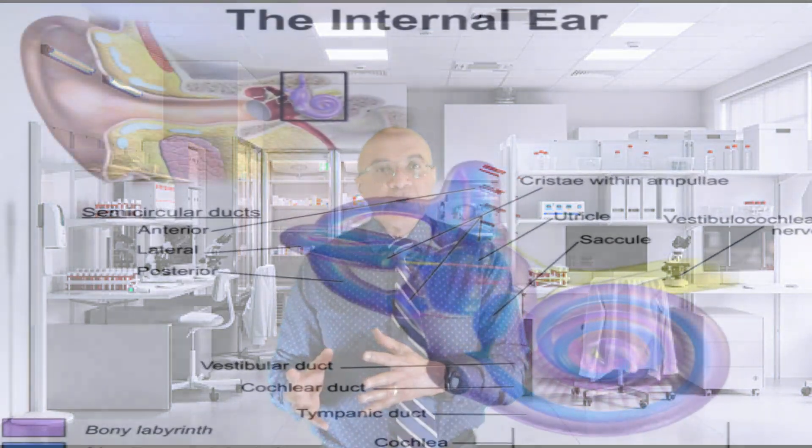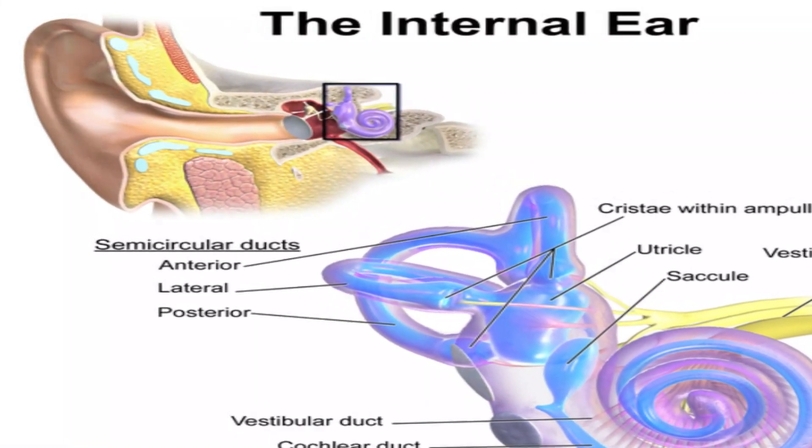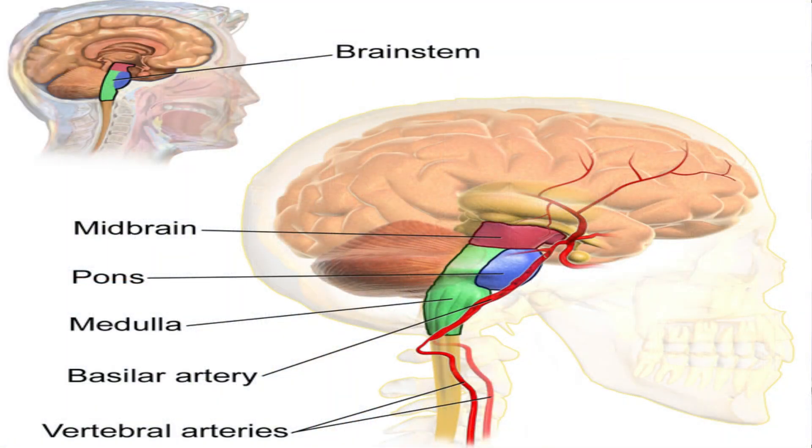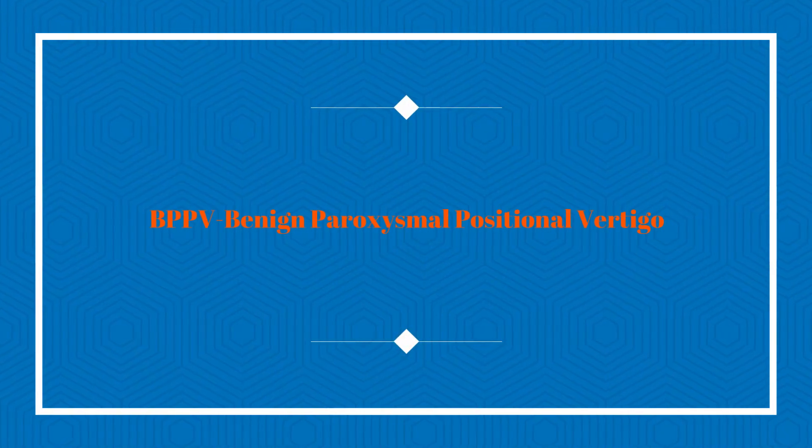Vertigo can be caused by damage to the inner ear or damage to certain parts of the brain. When vertigo is caused by damage to the inner ear, we call it peripheral vertigo. When the vertigo is the result of damage in other parts of the brain, we call it central vertigo. The most common type of vertigo is peripheral vertigo, and of the many types of peripheral vertigo, benign paroxysmal positional vertigo is the most common.